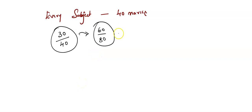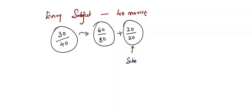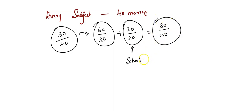Suppose you have scored 20 out of 20 in your internals. This marks is given from your school through assignments, project work, and so on. So 60 plus 20 is 80, and 80 plus 20 is 100. Your marks out of 100 is 80. This is the calculation done to determine your final result.